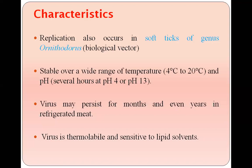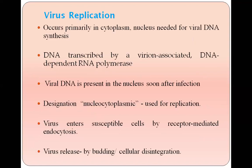The virus may persist for years in refrigerated meat. Replication occurs primarily in the cytoplasm, but the nucleus is also needed for replication of viral DNA. DNA is transcribed by a virion-associated DNA-dependent RNA polymerase, and viral DNA is present in the nucleus soon after infection — so the term nucleocytoplasmic is used for its replication. Entry of the virus is through receptor-mediated endocytosis, and release is through budding or cellular disintegration.